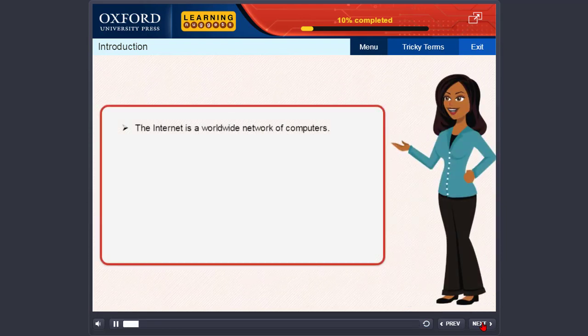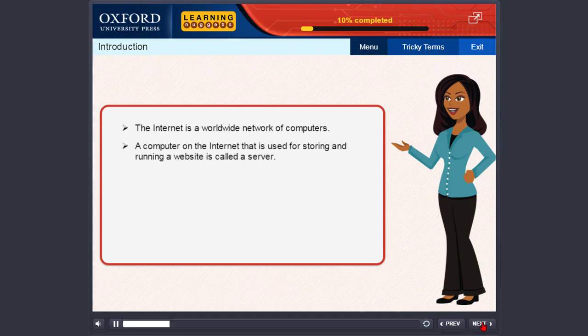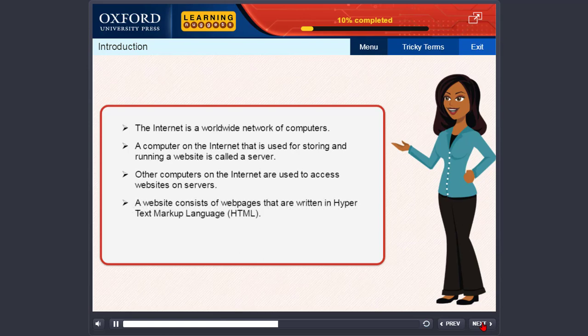The internet is a worldwide network of computers. A computer on the internet that is used for storing and running a website is called a server. Other computers on the internet are used to access websites on servers. A website consists of web pages that are written in hypertext markup language HTML.